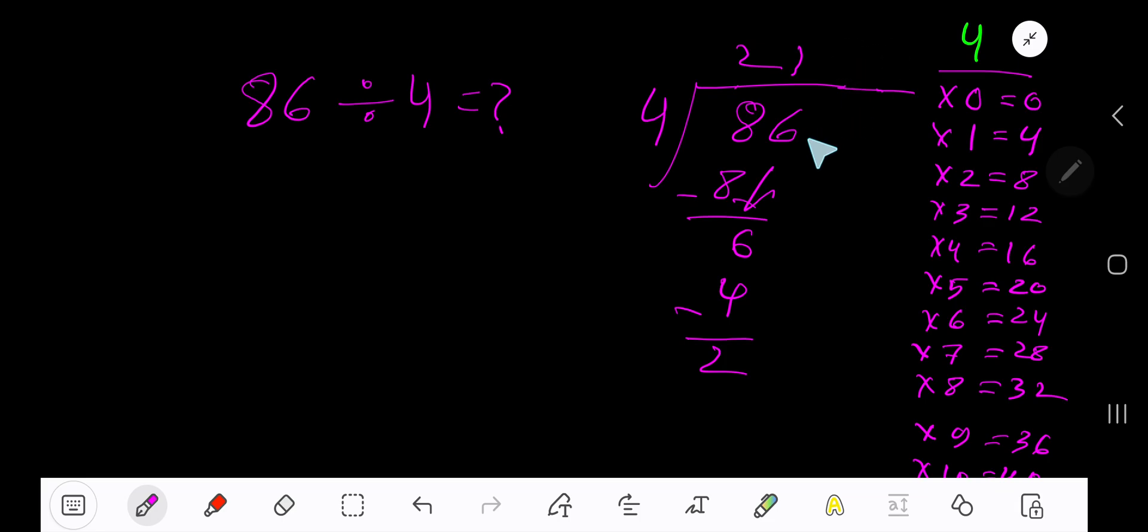To write your answer in decimal form, take your decimal and number of zeros. Bring down the first zero. Before this zero there is a decimal. Decimal must come to the quotient directly.